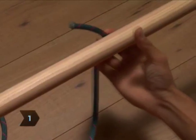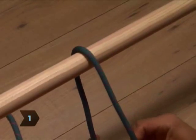Step 1. Wrap the end of the rope around the ring or post from back to front.